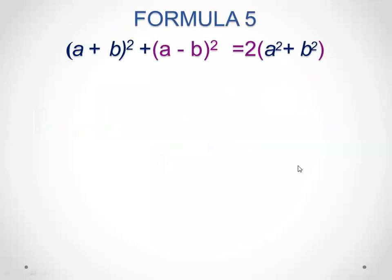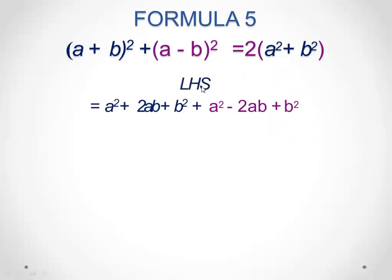Next is formula number five: a plus b whole square plus a minus b whole square is equal to 2 times a square plus b square. Beginning with the left hand side, opening a plus b whole square gives a square plus 2ab plus b square.